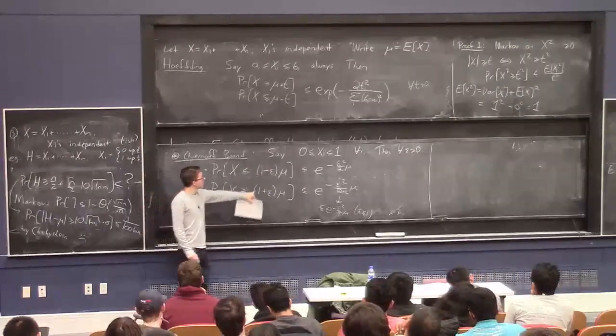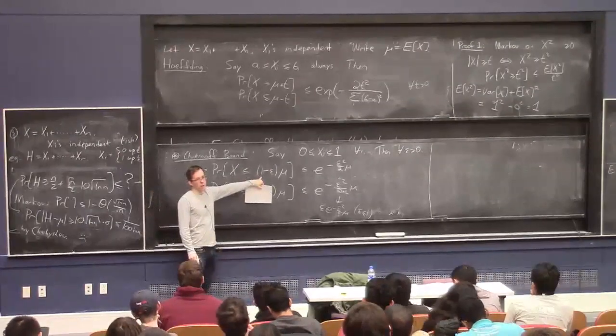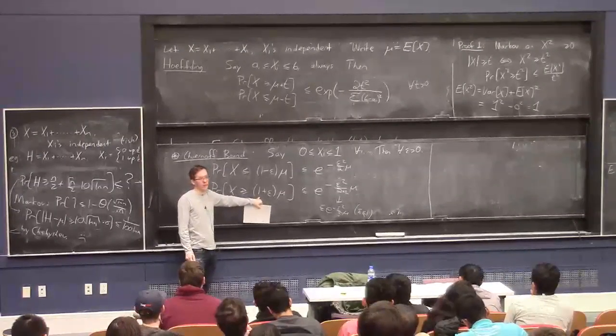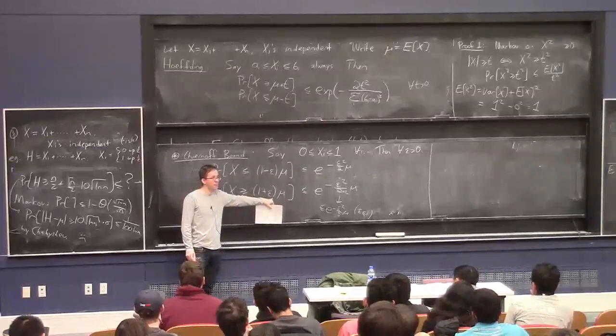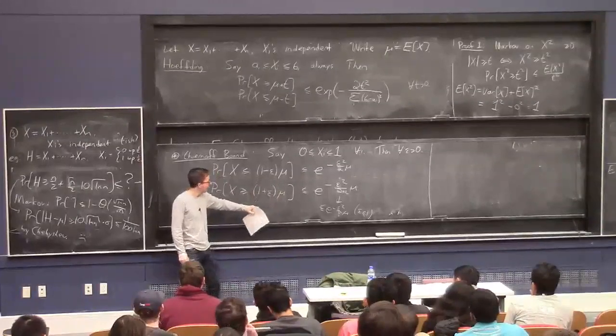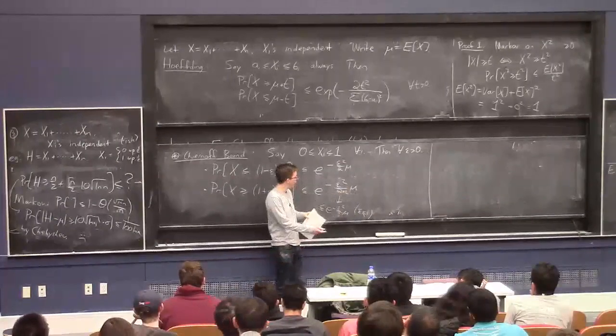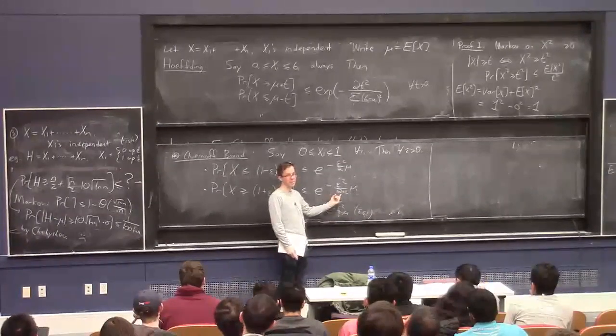But, see here, it doesn't make sense to even take epsilon bigger than 1. But here, you might take epsilon to be 5. And you're like, oh, I'm interested in the rare case that the probability that X is bigger than its mean by a factor of 6. And then, you see, actually, as epsilon gets larger and larger, this is no longer quadratic in epsilon. If epsilon is actually large, then this becomes linear in epsilon.